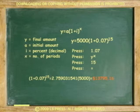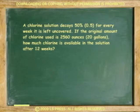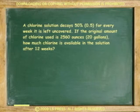The girl at age 20 will have $13,795.16 — she earned $8,795.16 in interest. Now let's do an example in exponential decay. A chlorine solution decays 50%, or half, for every week it is left uncovered. If the original amount of chlorine used is 2,560 ounces, or the equivalent of 20 gallons, how much chlorine is available in the solution after 12 weeks?